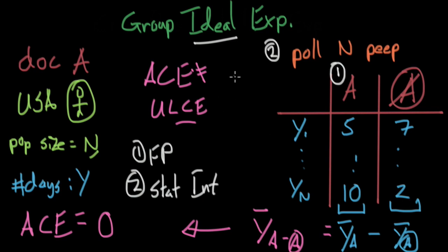Next time, when we look at a regular group experiment, we're going to discuss how we'll deal with number one, the fundamental problem of causal inference, and number two, the problem of statistical inference.